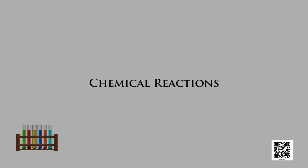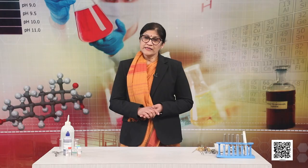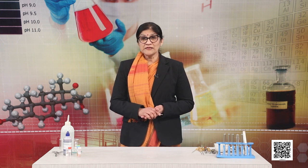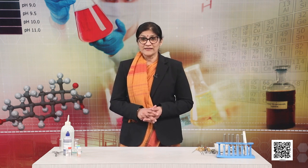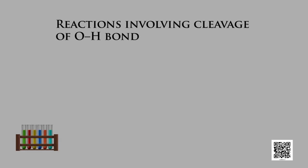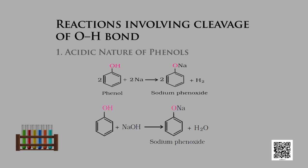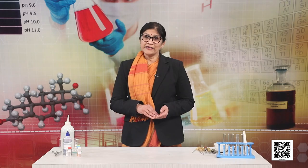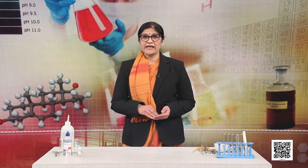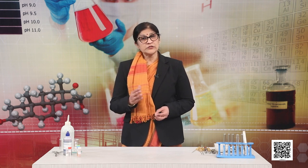Let us now look at chemical reactions. The first type involves cleavage of oxygen-hydrogen bonds, that is the acidic character. The acidity of phenols is evident from their reaction with active metals like sodium, potassium, aluminium, and in fact phenols are better Brønsted acids than alcohols — they can donate a proton to a stronger base.